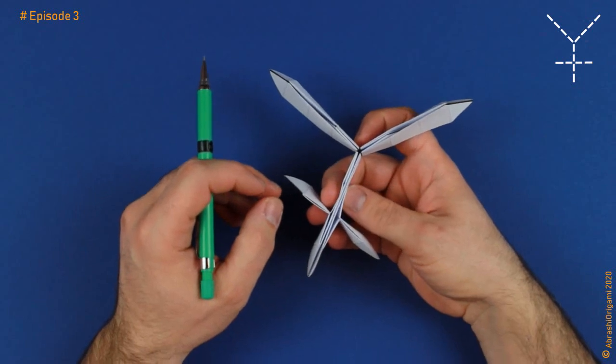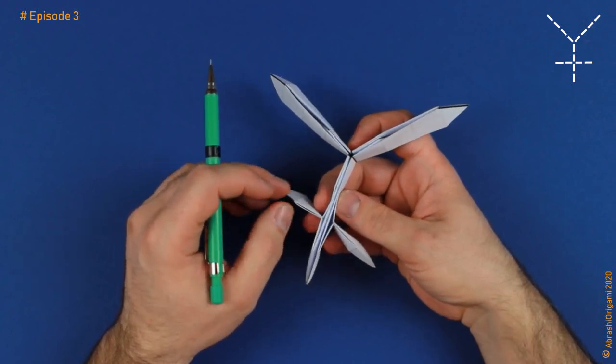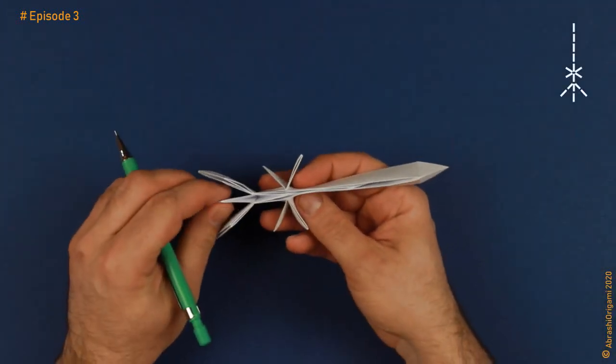But what about rivers? Do rivers have ridge creases as well? The answer is of course, yes, they do. But the principle is a little bit different. To be able to show you this new principle, this new approach, we're gonna need a different base. One that has a more complex river, a river that isn't straight like in our first example. This is our new base.